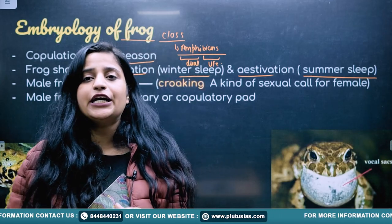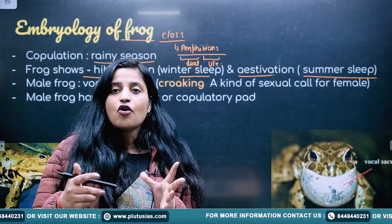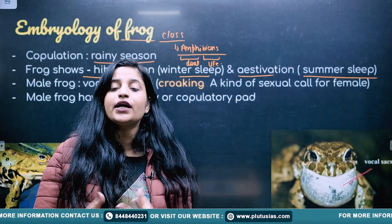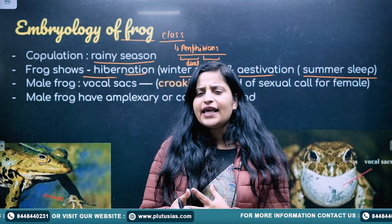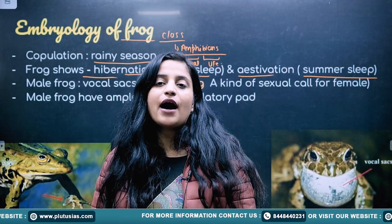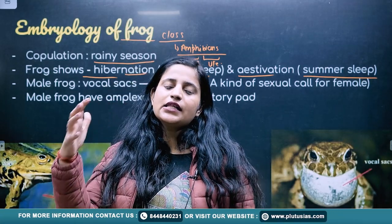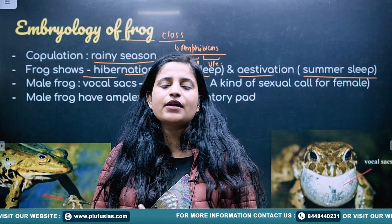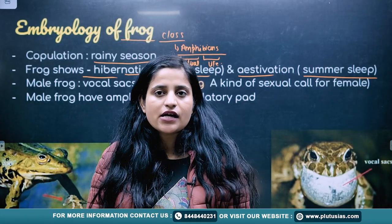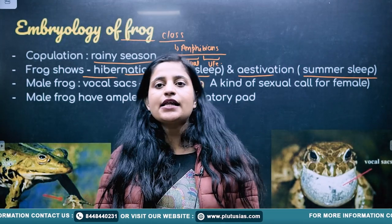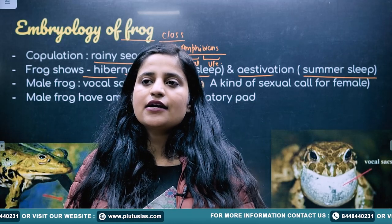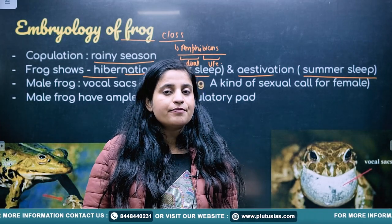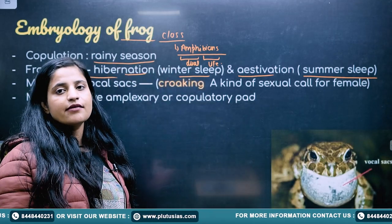How do you distinguish between a male frog and a female frog? Male frogs have a well-developed vocal sac and are able to make a sound known as croaking sound. Why do they make this sound? To attract their female partner for sexual intercourse. During the rainy season, the male frog makes a croaking sound — a kind of sexual call for the female.